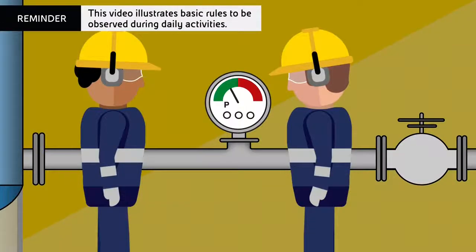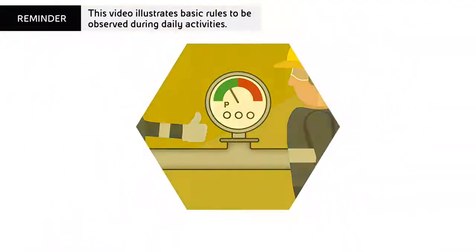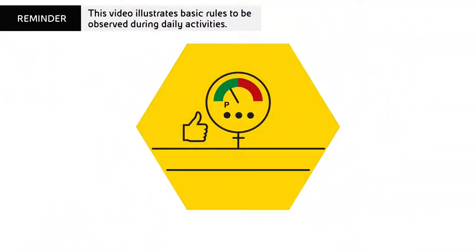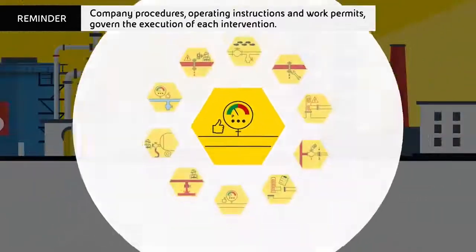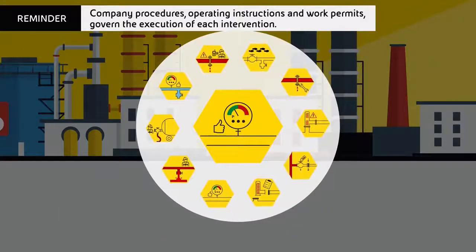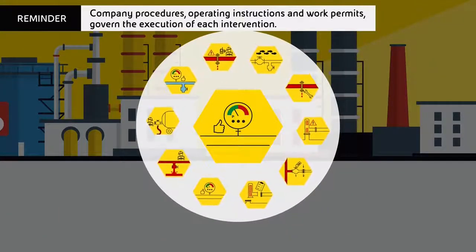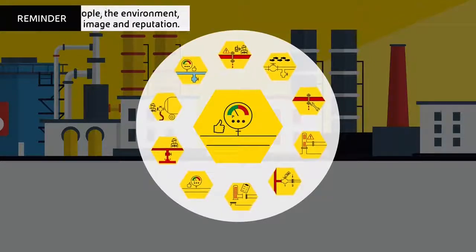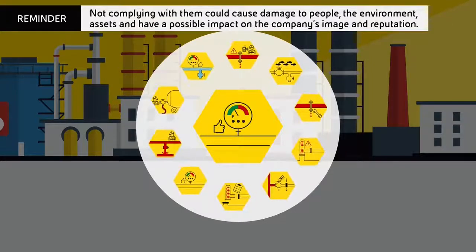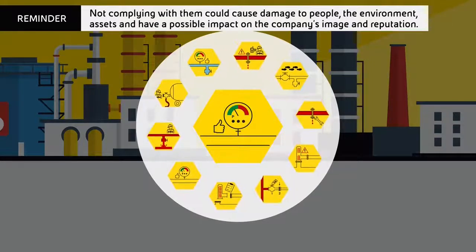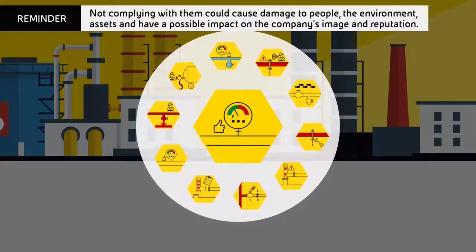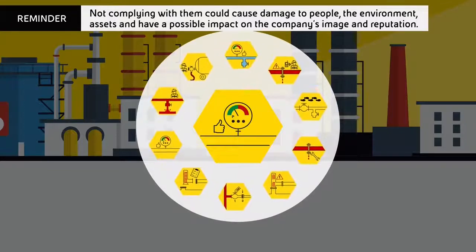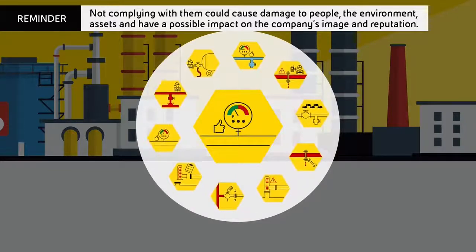This video illustrates basic rules to be observed during daily activities. Company procedures, operating instructions and work permits govern the execution of each intervention. Not complying with them could cause damage to people, the environment, assets, and have a possible impact on the company's image and reputation.